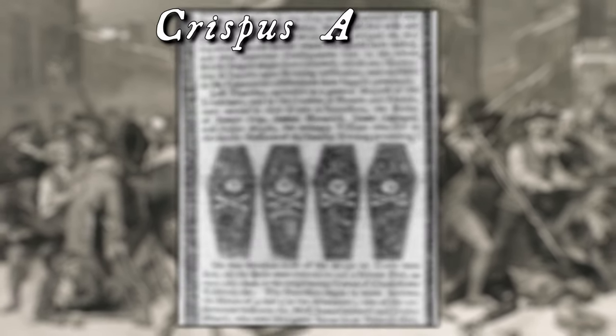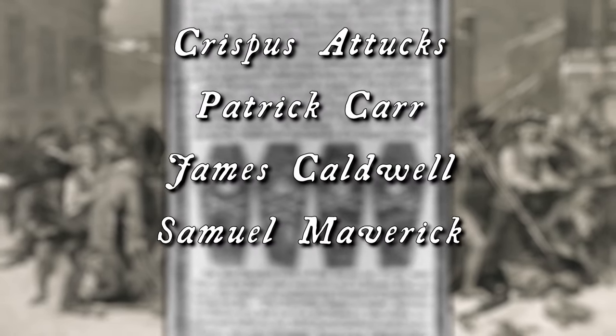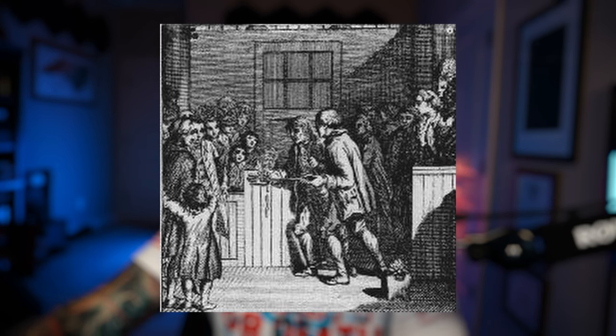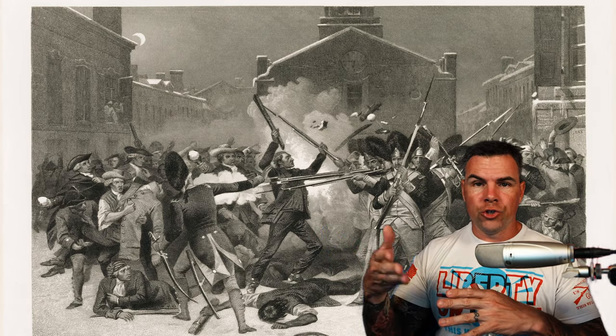This resulted in the deaths of five people and the wounding of six. The five people who lost their lives were Crispus Attucks, Patrick Carr, James Caldwell, Samuel Maverick, and Samuel Gray. The soldiers were brought to trial, and Captain Preston along with most of the soldiers were found not guilty due to claiming self-defense. Only two soldiers were found guilty of manslaughter, and their punishment was being branded on their thumbs. This whole episode was used as propaganda to further propagate the growing anti-British sentiment that was already on the rise.